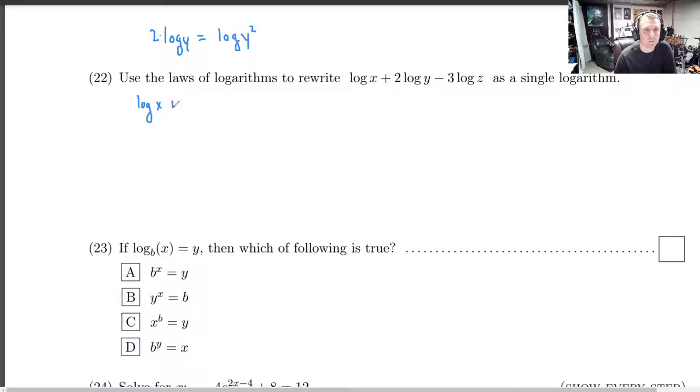So this is just log of y squared and this is log of z cubed. So log of x plus log of y squared minus log of z cubed.